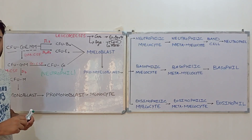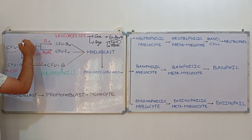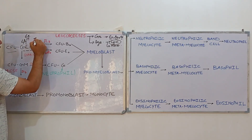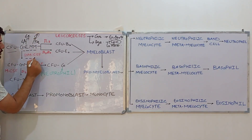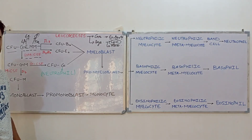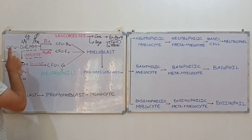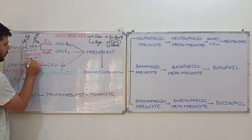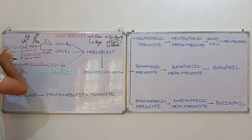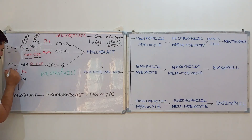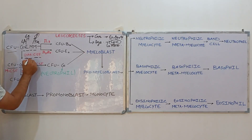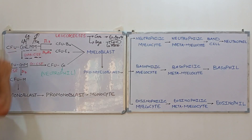This common myeloid progenitor cell divides into lineage-restricted cells only in the presence of certain growth factors. If erythropoietin is present, erythrocytes form. If thrombopoietin is present, platelets form. If granulocyte-monocyte colony stimulating factor (GM-CSF) is present, it acts on the CFU-GEMM and converts it into colony forming unit granulocyte-monocyte (CFU-GM).